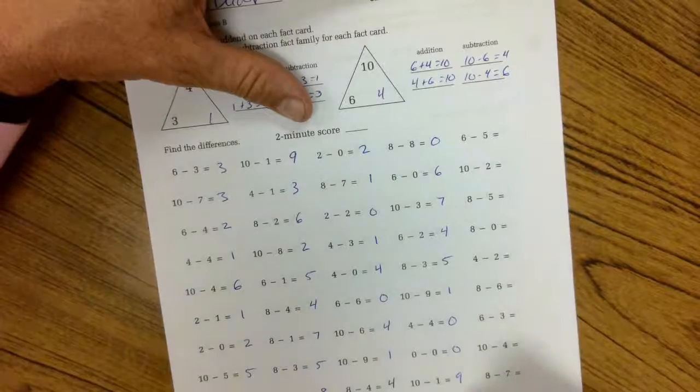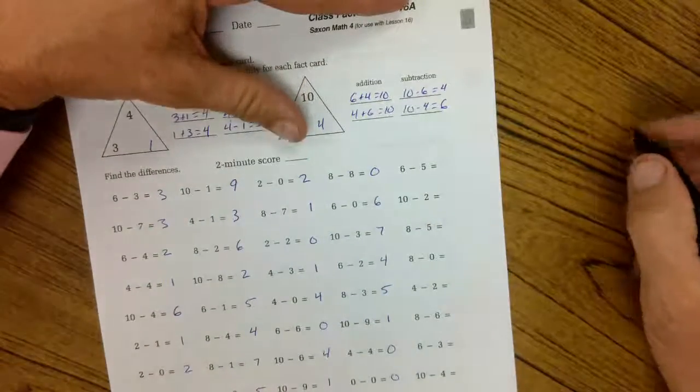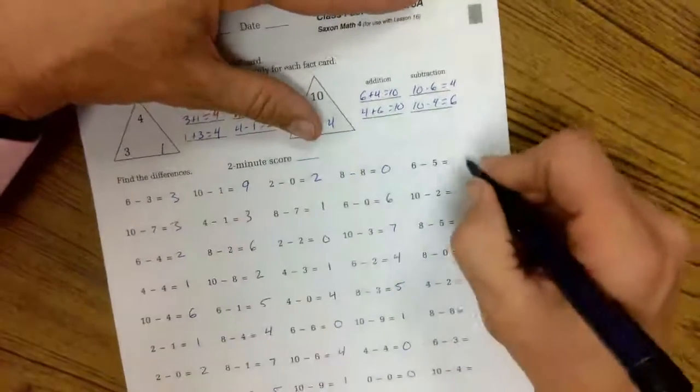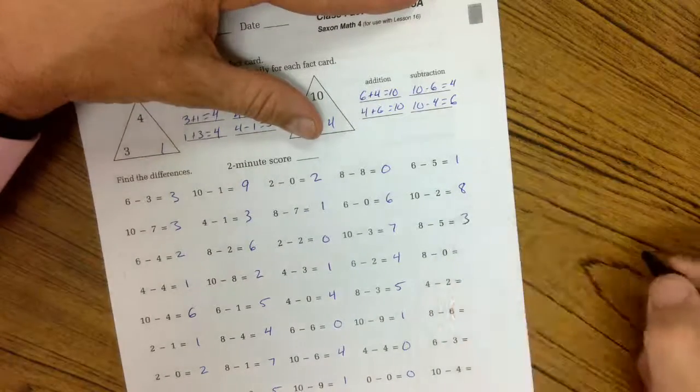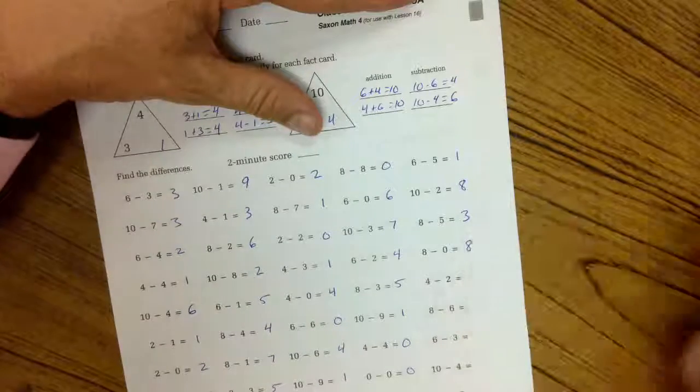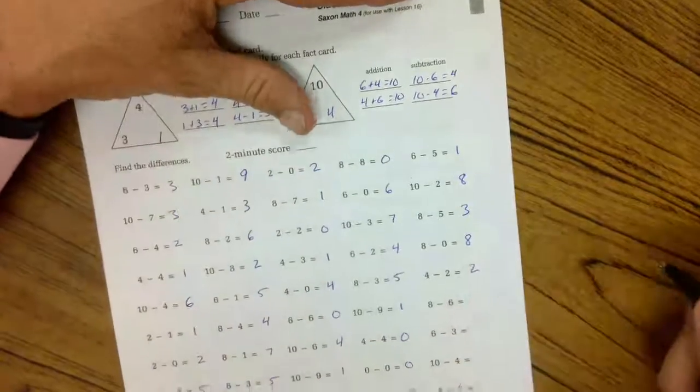10 minus 8 is 2. 6 minus 5 is 1. 10 minus 2 is 8. 8 minus 5 is 3. 8 minus 0 is 8. 4 minus 2 is 2.